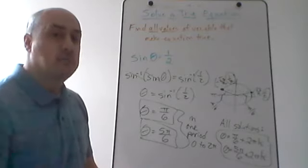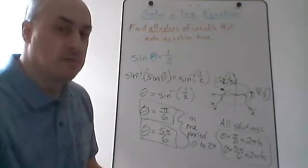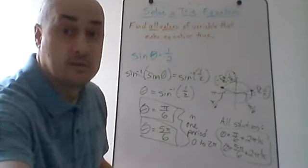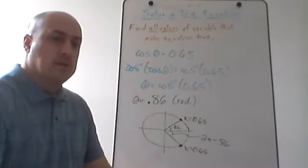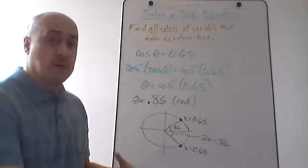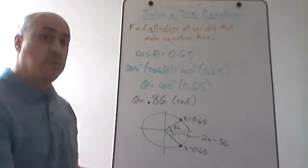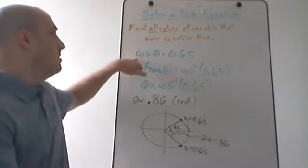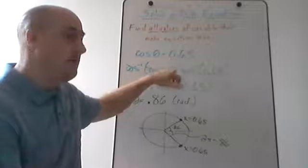That's our first example. Now for the next example: the equation is cosine of theta equals 0.65.